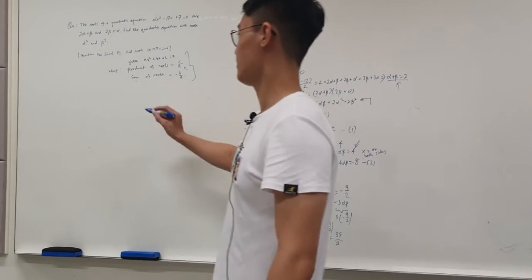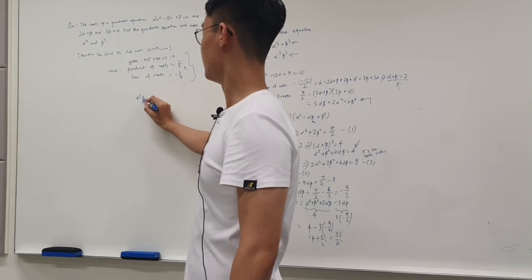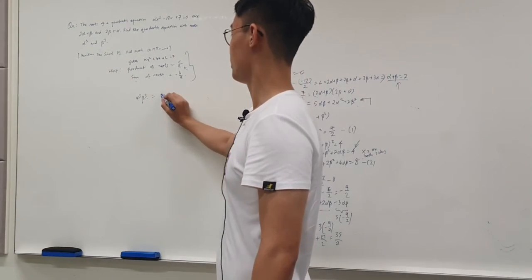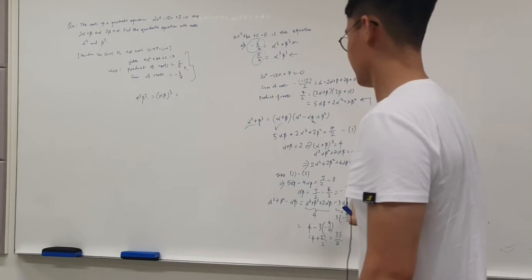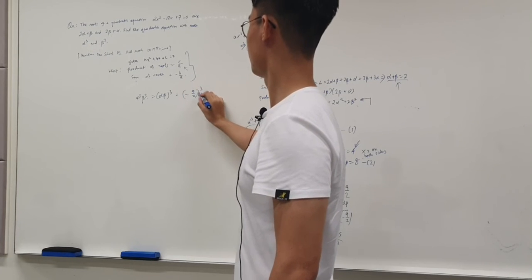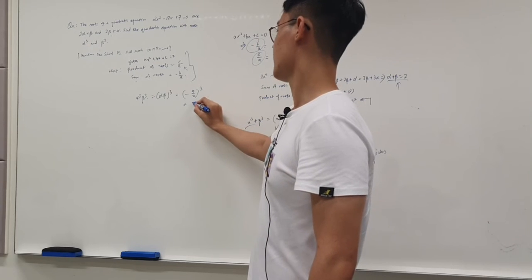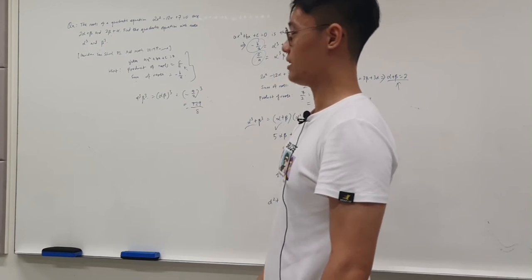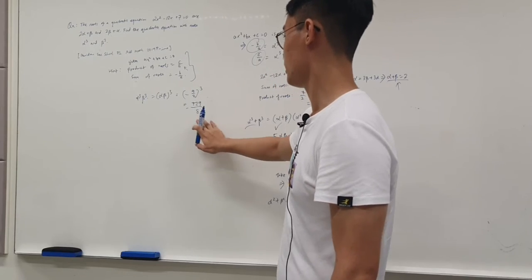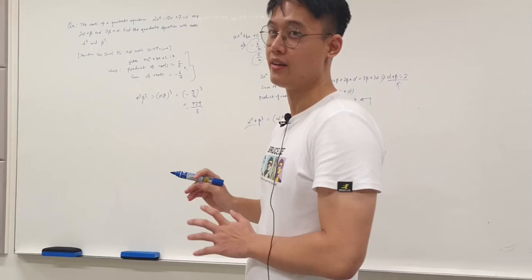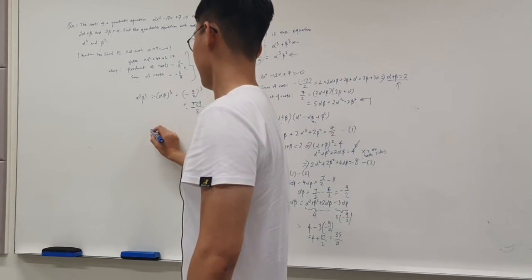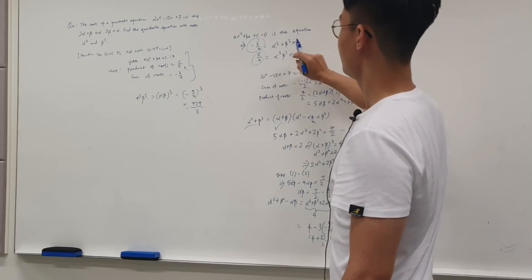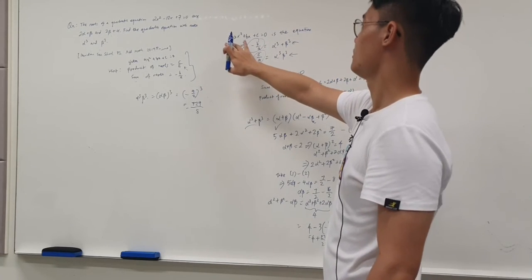Now let's find α³β³. We just need to cube αβ. Since αβ = −9/2, we have (−9/2)³ = −729/8. Now we are ready to put all of this into a quadratic equation. The sum of roots is 35 and the product of roots is −729/8, so we can substitute these into the standard form.